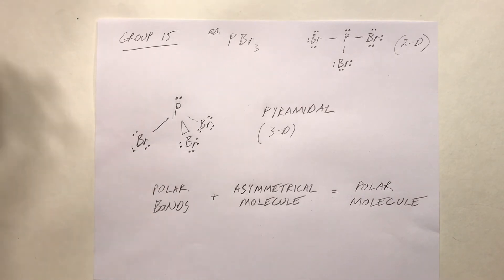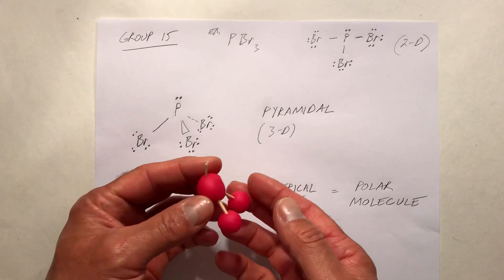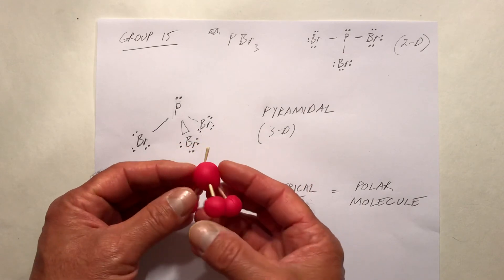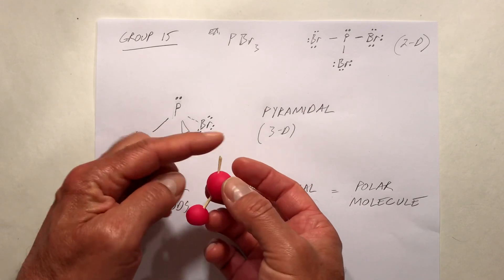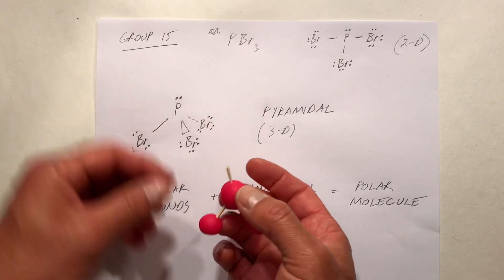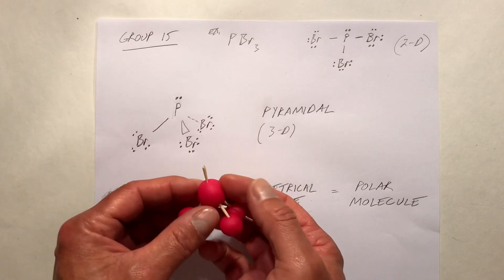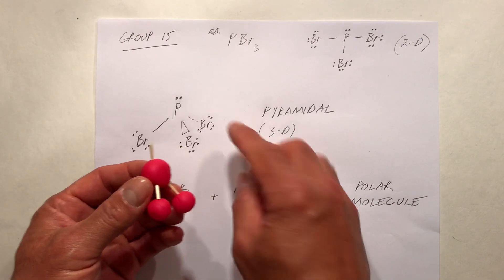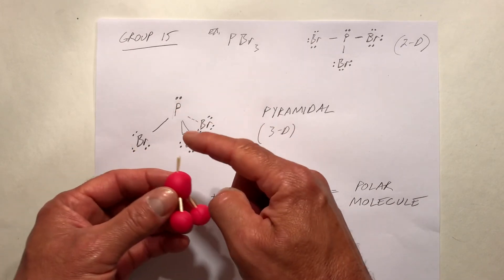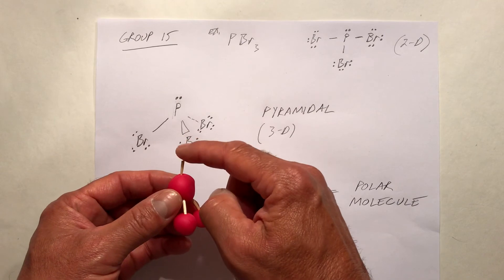This kind of looks like tetrahedral, doesn't it? But what's missing is that bond to an atom at the top. What we have instead is a pair of non-bonding electrons.